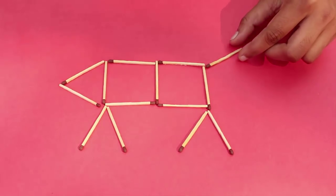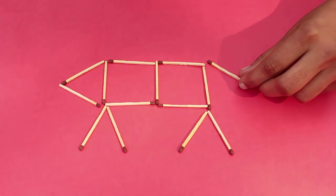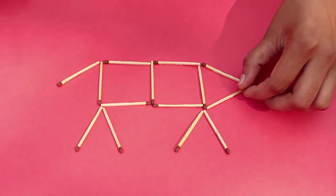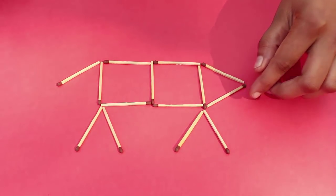First you move the right side matchstick lower and then place this one. And now the dog which was earlier facing left is now facing right.